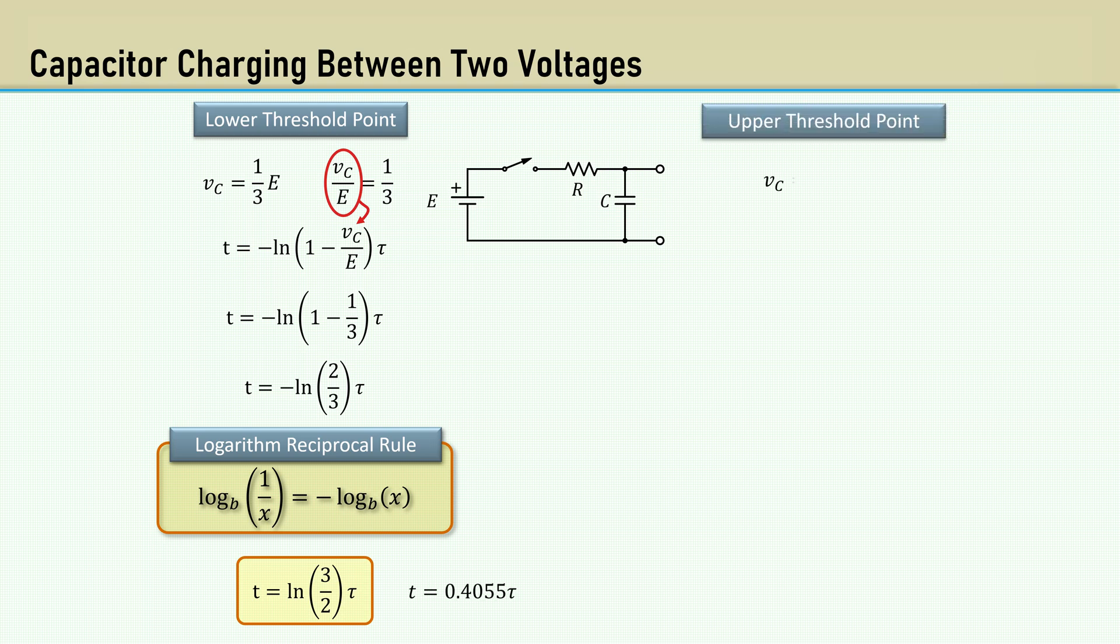Now for the upper threshold voltage, two-thirds E. Rearrange to solve for Vc over E. And plug Vc over E into our equation for time again. Also using the logarithm reciprocal rule, we get the natural log of three times tau.